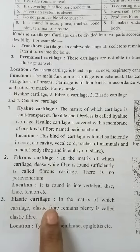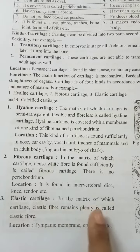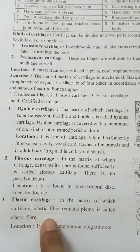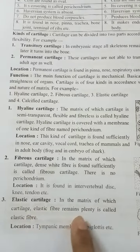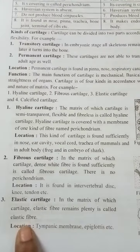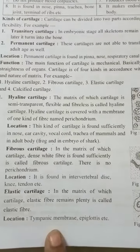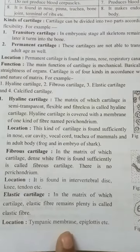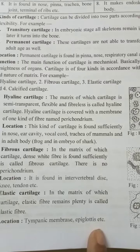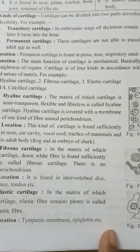Third: elastic cartilage. The cartilage in whose matrix elastic fiber remains in plenty is called elastic cartilage. Its location includes the tympanic membrane, epiglottis, and similar structures.